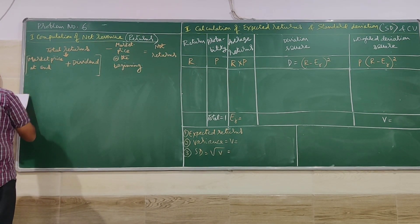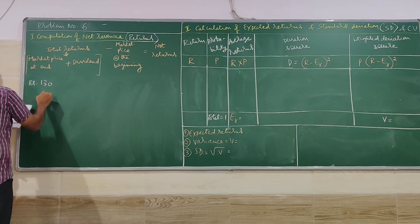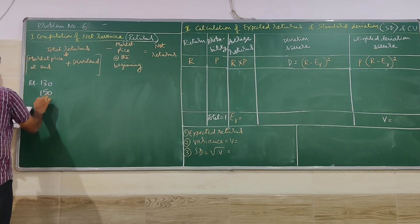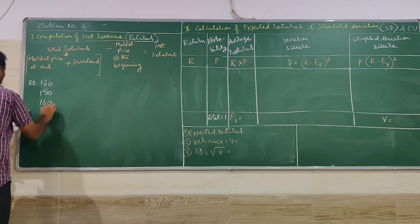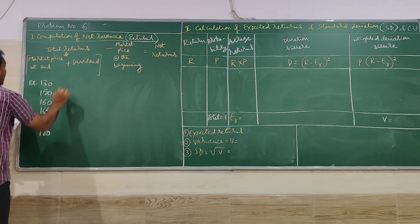Market price at the end of the year. So here 130, 150, 160, 165, 175, 180.